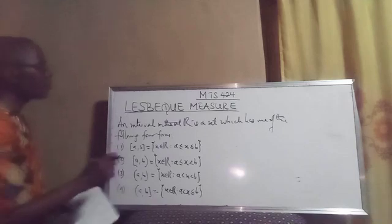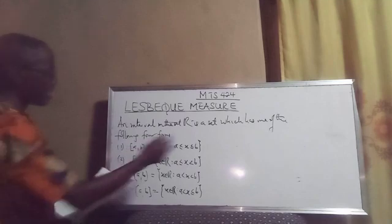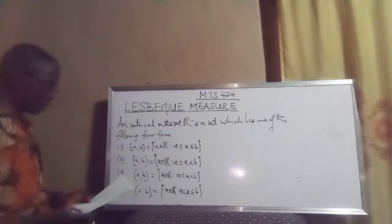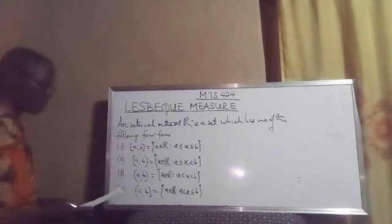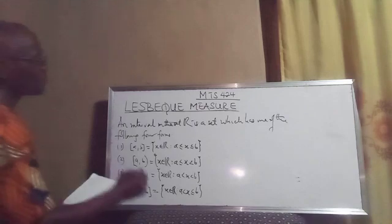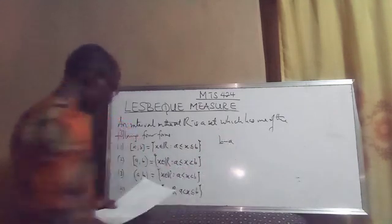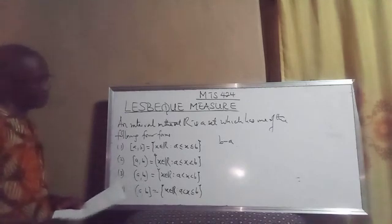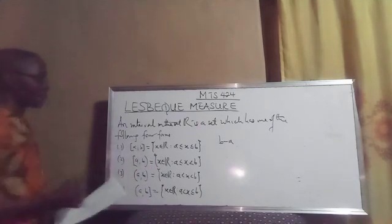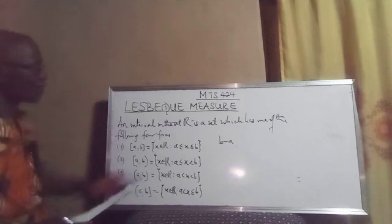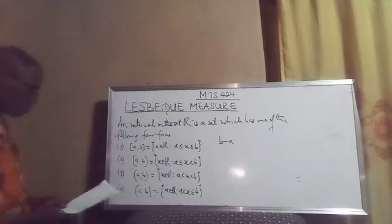In each of these cases, a and b are referred to as endpoints, while b minus a is the length of the interval.